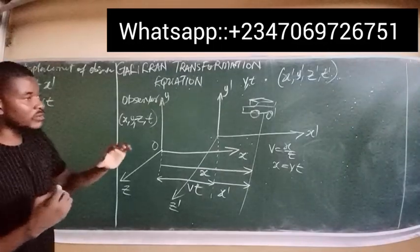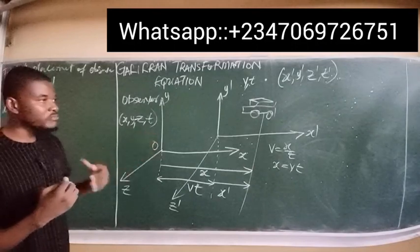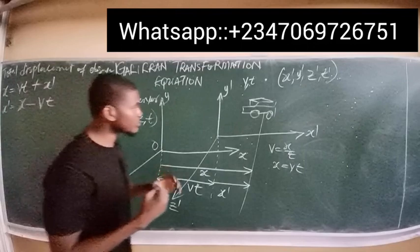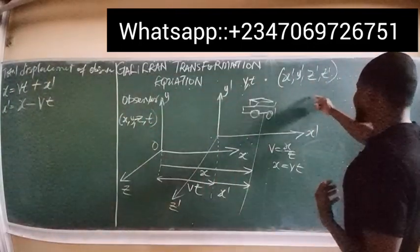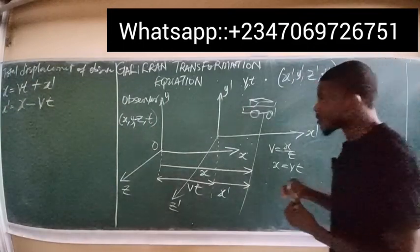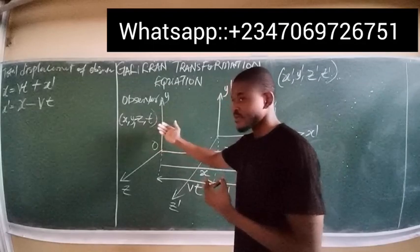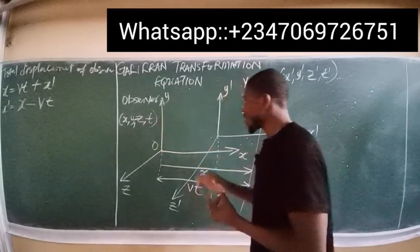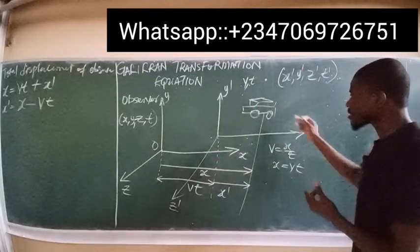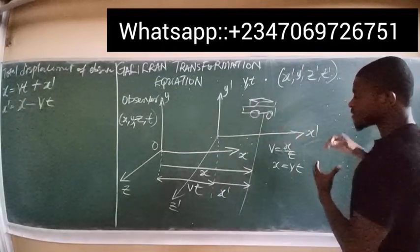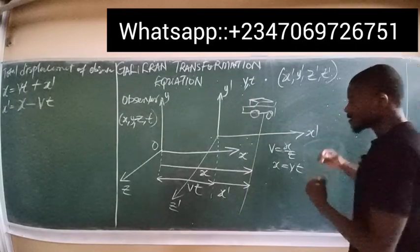So the coordinate of the event in the second frame is x prime, y prime, z prime, and t prime, while the observer's coordinate in the first frame is x, y, z, and t. Transposing from the first frame to the second frame gives us x prime, y prime, z prime, and t prime as the coordinates of the event in the second reference frame.